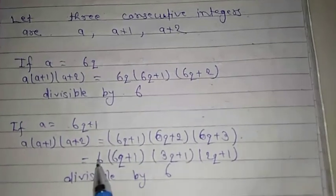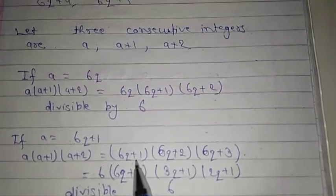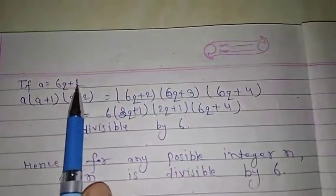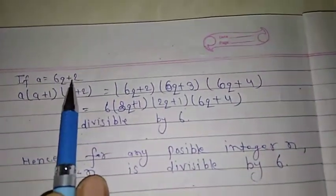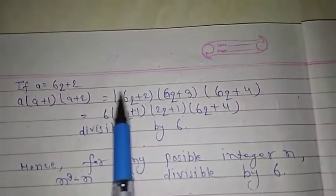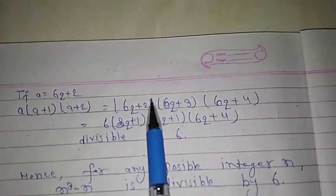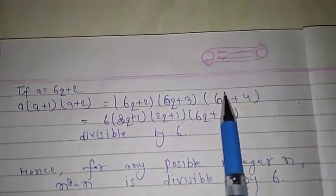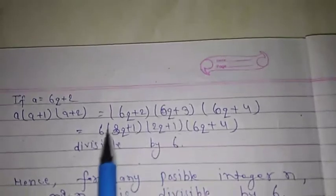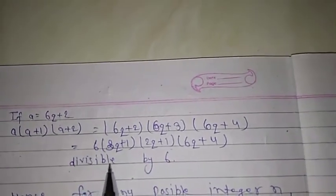If a = 6q+2, the product of three consecutive integers = (6q+2)(6q+3)(6q+4). We take 2 common from this term and 3 from this term, which becomes 6, so it is simply divisible by 6.